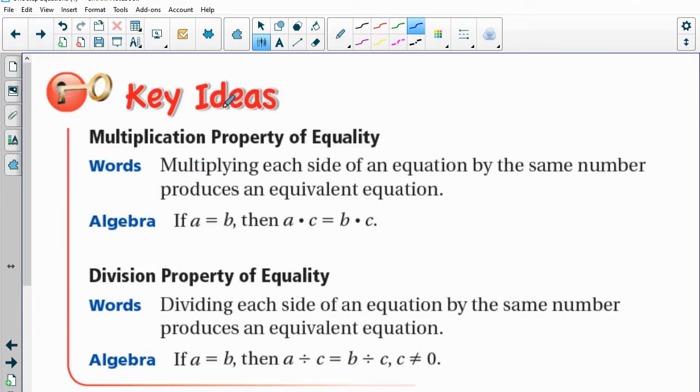So there's two properties that we're going to need in order to solve these type of equations. The first one is the multiplication property, which basically states if I have an equation, something equals something else, I can multiply both sides of that equation by the same number, and it will still be a true and equivalent equation.